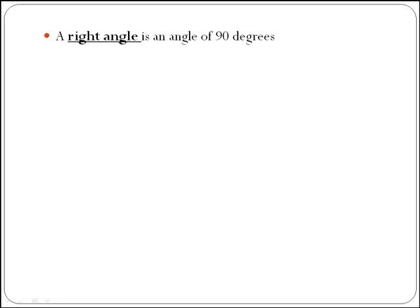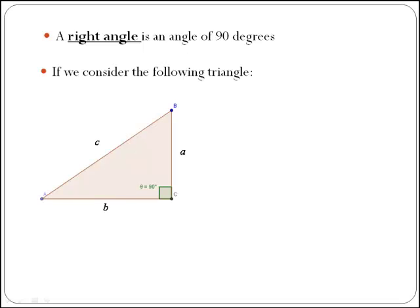A right angle is an angle of 90 degrees. If you consider the following triangle, this is called a right angle triangle because it contains an angle of 90 degrees.